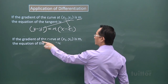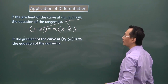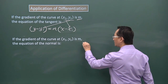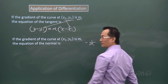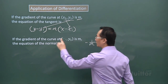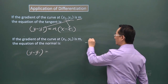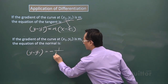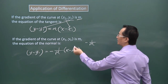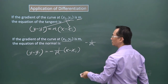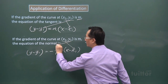Now we look at the gradient of the normal. If the gradient of the curve is m, then the gradient of the normal is not m but negative 1 over m. So the equation of the normal is also in the formation y minus y1 equals negative 1 over m times (x minus x1). Again, x1 and y1 are taken from the point of contact.